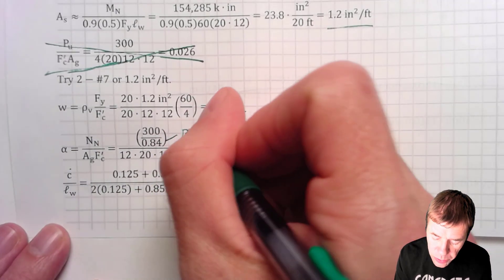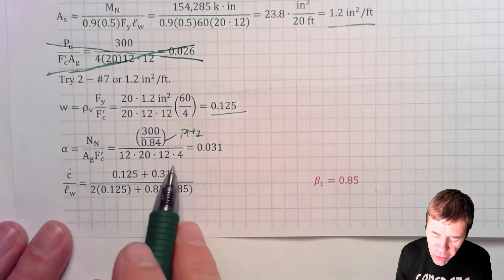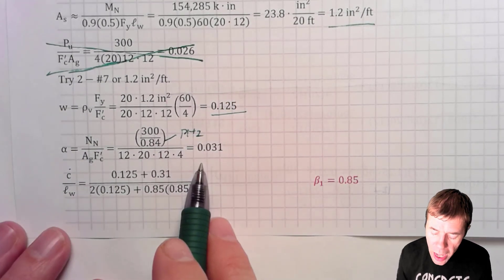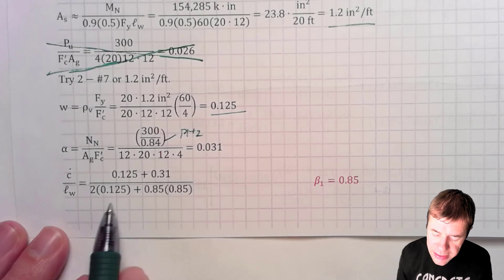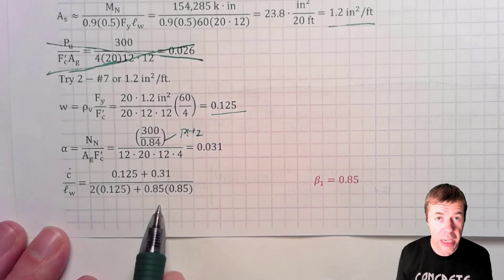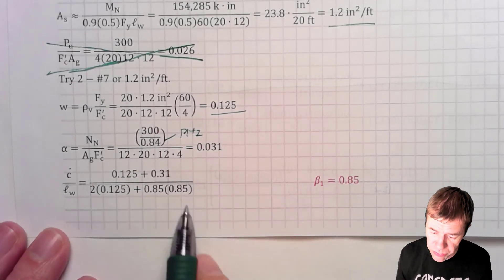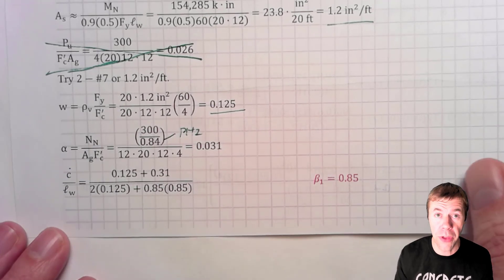I'm getting again using my phi factor. That's my phi factor we talked about before. This is my area gross. So my f'c, I get 0.031. I plug in for my c over lw. Again, equations on a previous video. And I'm almost there.